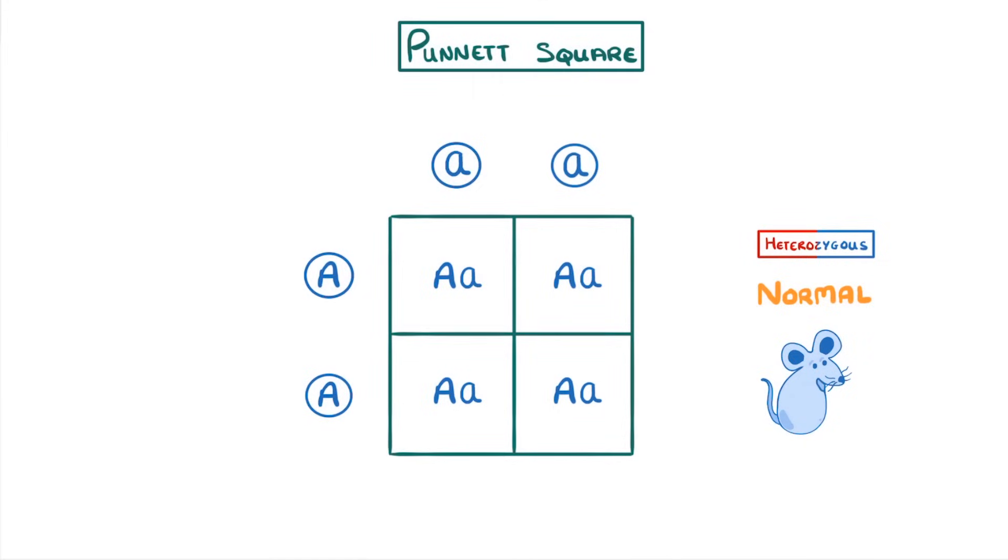For a more interesting example, let's use the Punnett square to work out what would happen if two of these heterozygous normal offspring were to mate together. First, as all the offspring have the genotype of capital A lowercase a, we place capital A and lowercase a gametes on the top and the left.